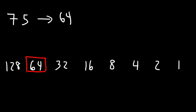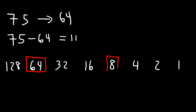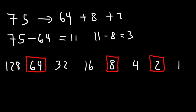Now once you have your first number, which is 64 in this case, subtract. Let's subtract 75 by 64, and so that will give us 11. Now the highest number that's under 11 is 8. 16 exceeds 11, so we can't use that. So let's put an 8 here. Let's subtract 11 by 8. 11 minus 8 is 3. And so the next highest number just under 3 is 2. Let's put a 2 here. And then 3 minus 2 is 1. So the next highest number is 1.